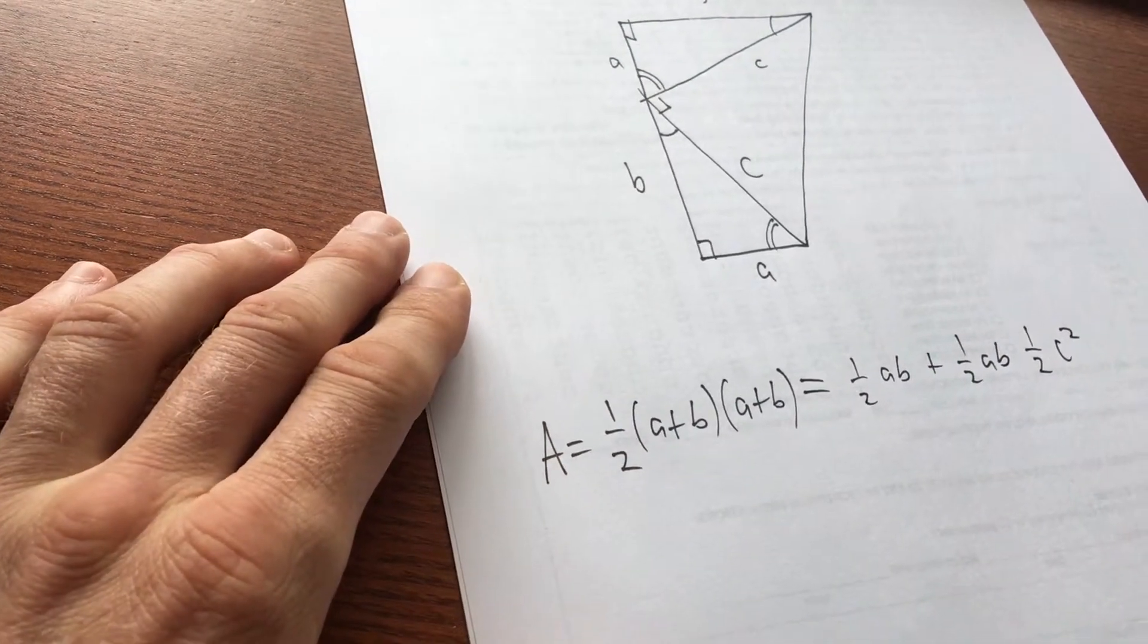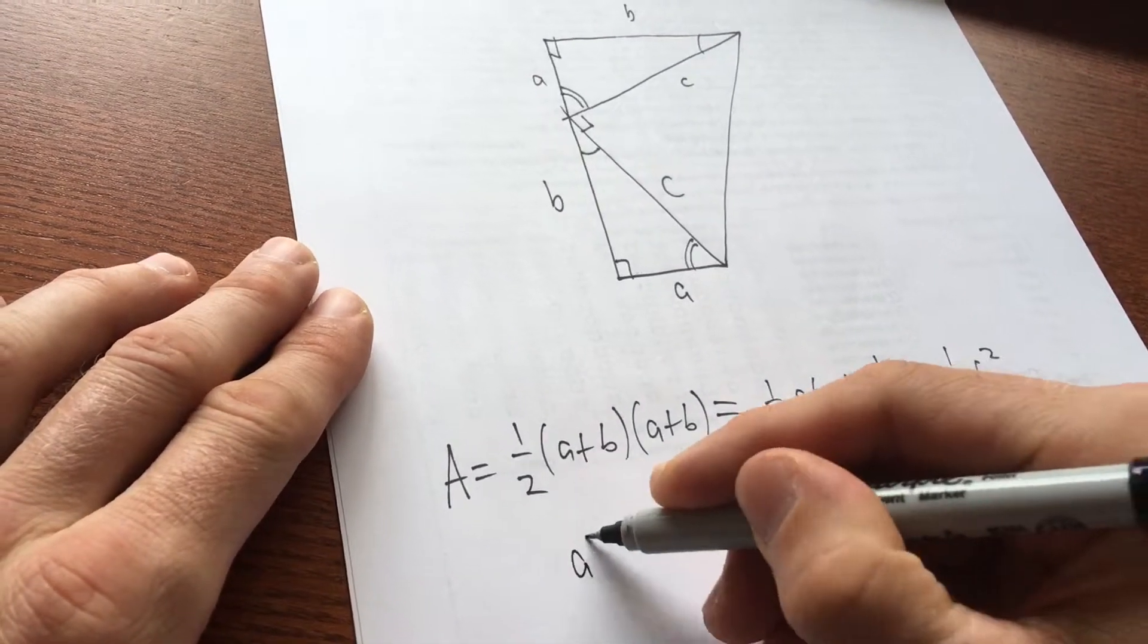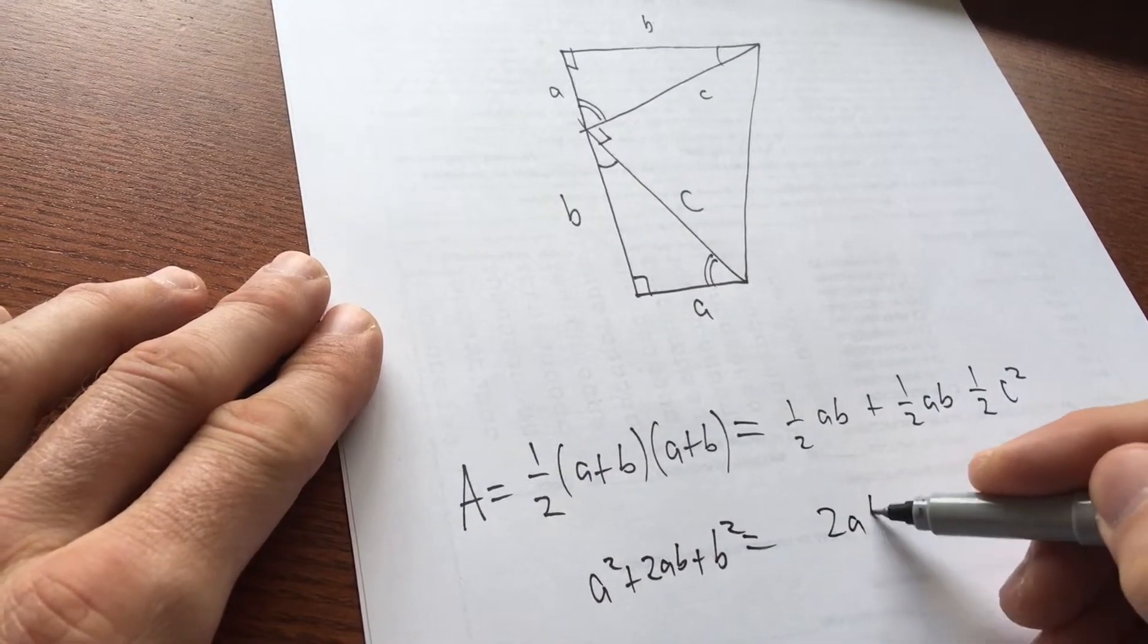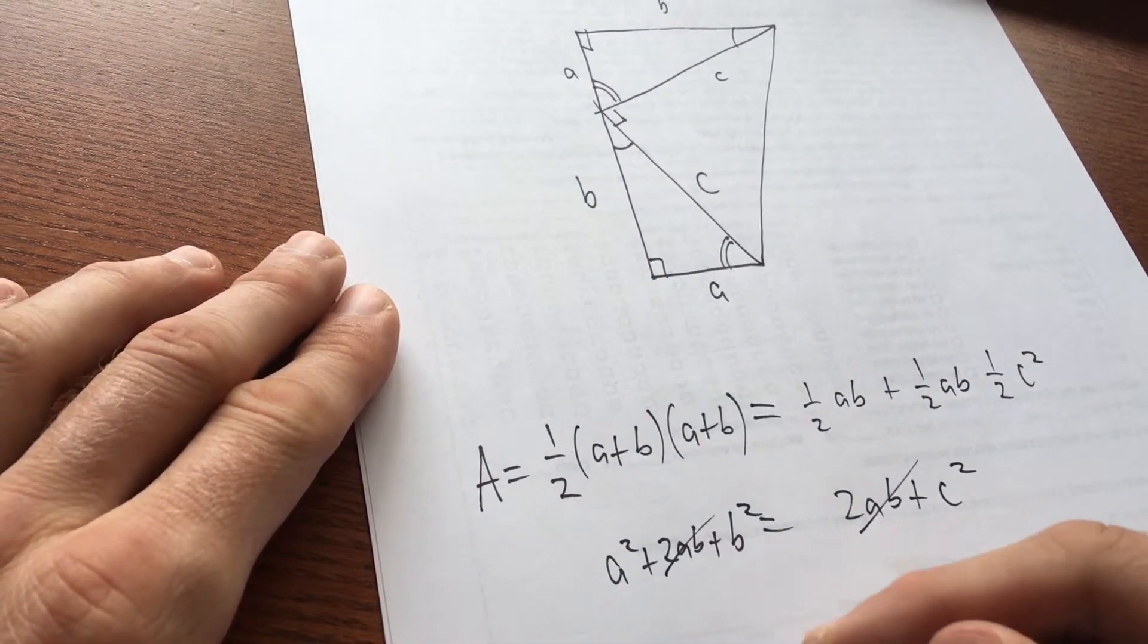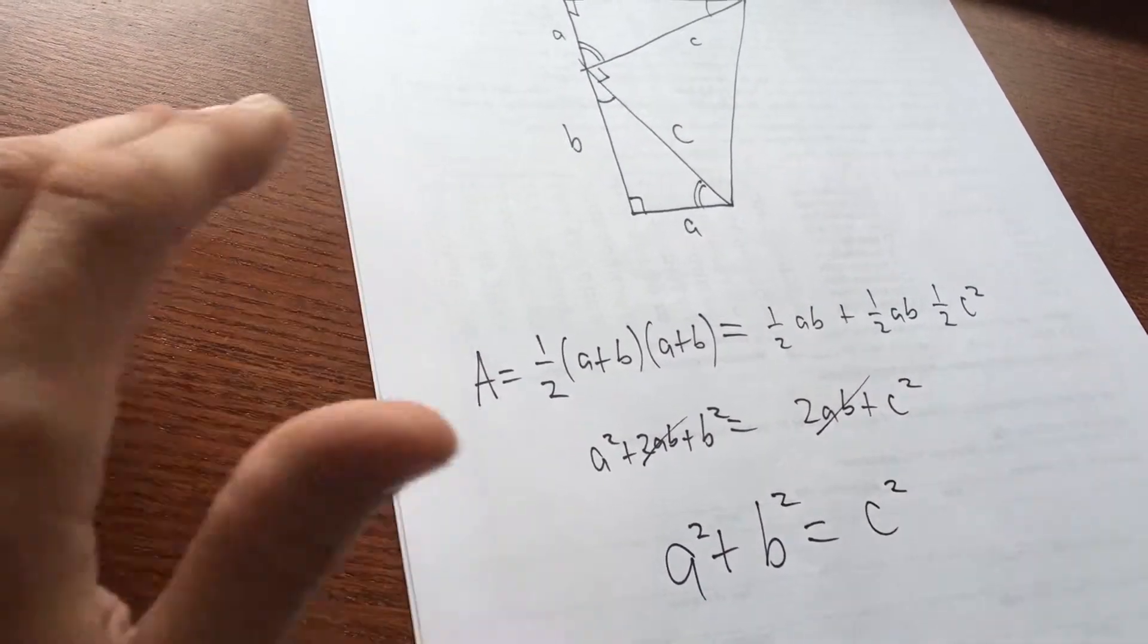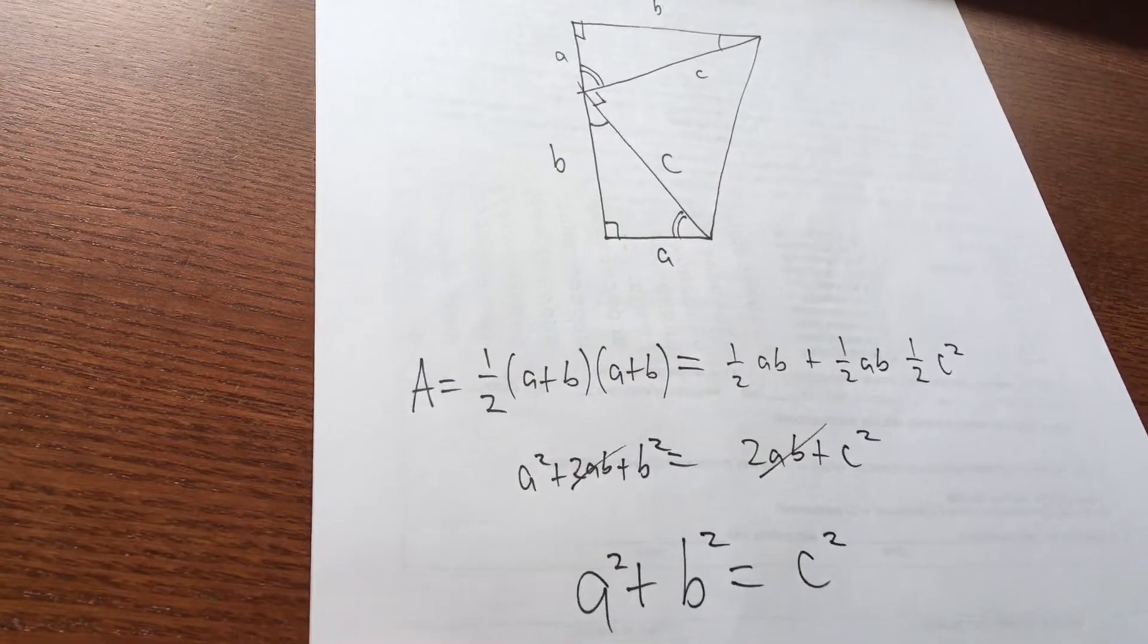So if we multiply this whole thing by two to get rid of the halves and expand this, we get a squared plus two ab plus b squared equals two ab plus c squared. Cancel that guy. And we're left with a squared plus b squared equals c squared. So that's a really cool proof using the area of a trapezoid.